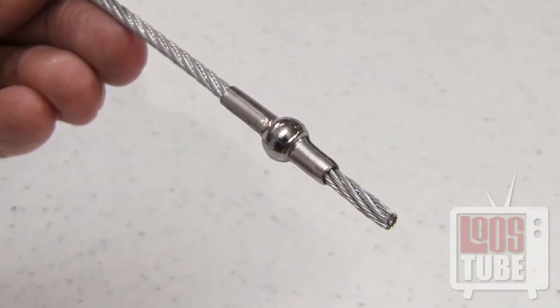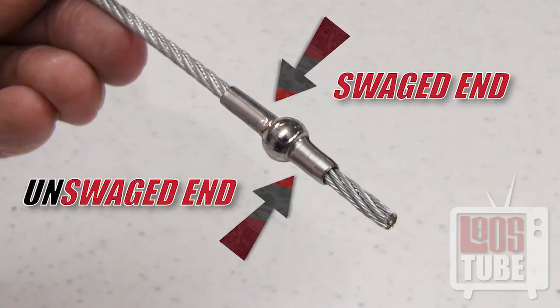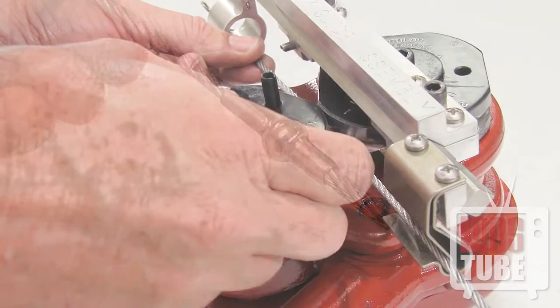If you are swaging double shank ball ends, you will repeat this process exactly the same way, but in the other direction.